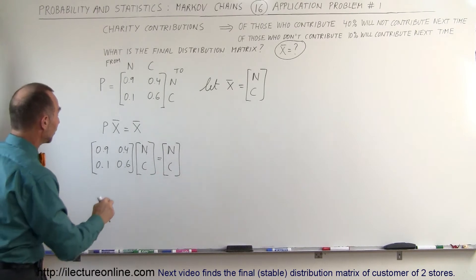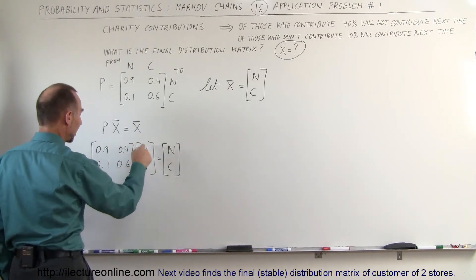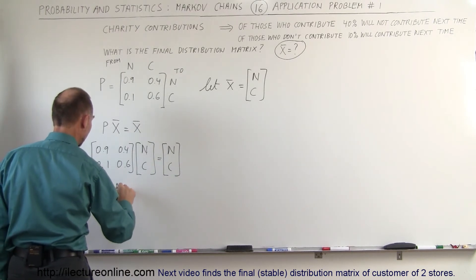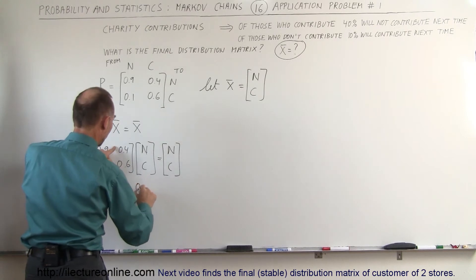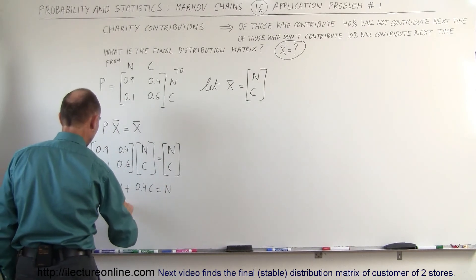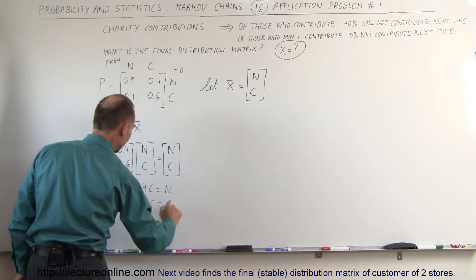Now all we have to do is multiply this times this, set equal to N, this times this, set equal to C, so we end up with 0.9N plus 0.4C equals N, and 0.1N plus 0.6C equals C.